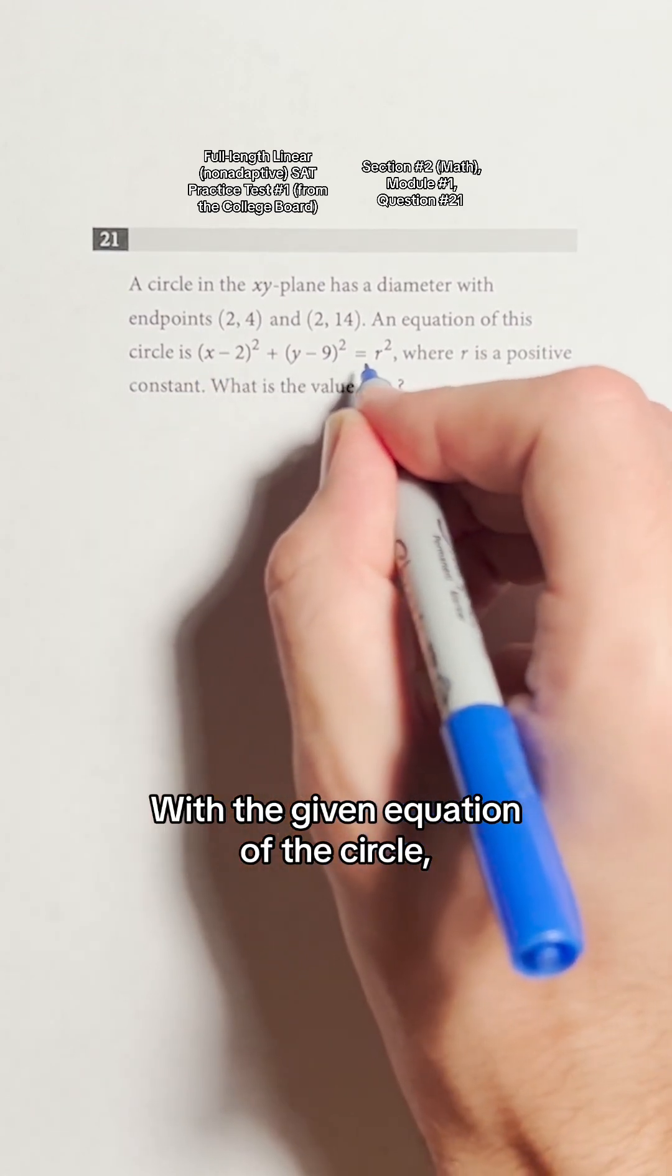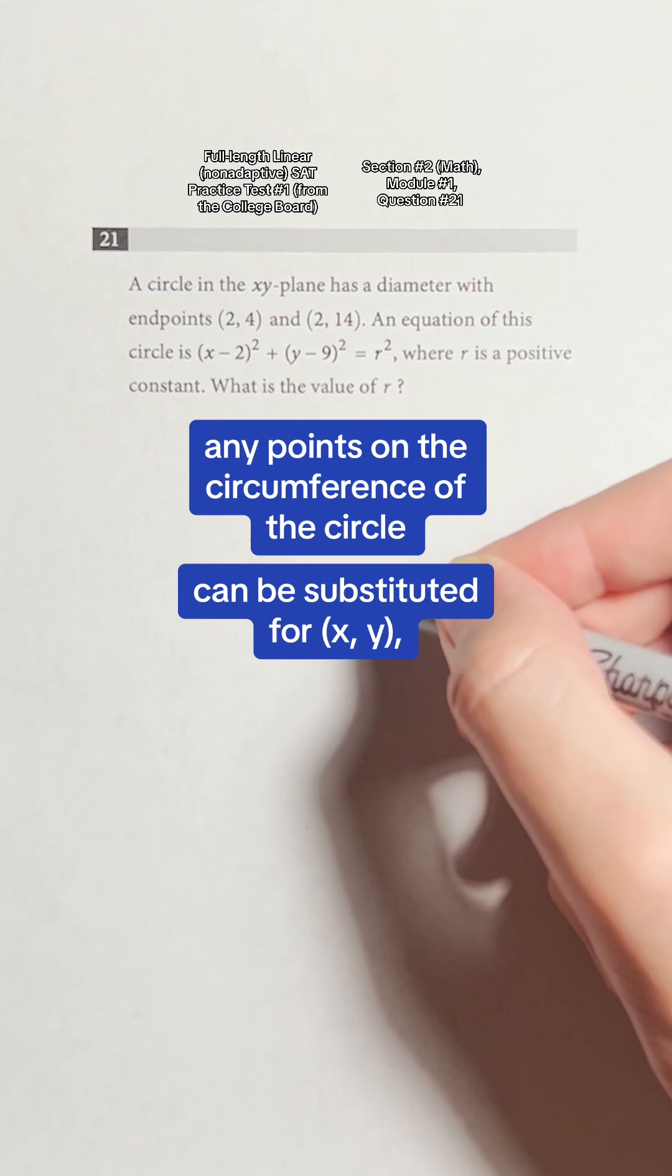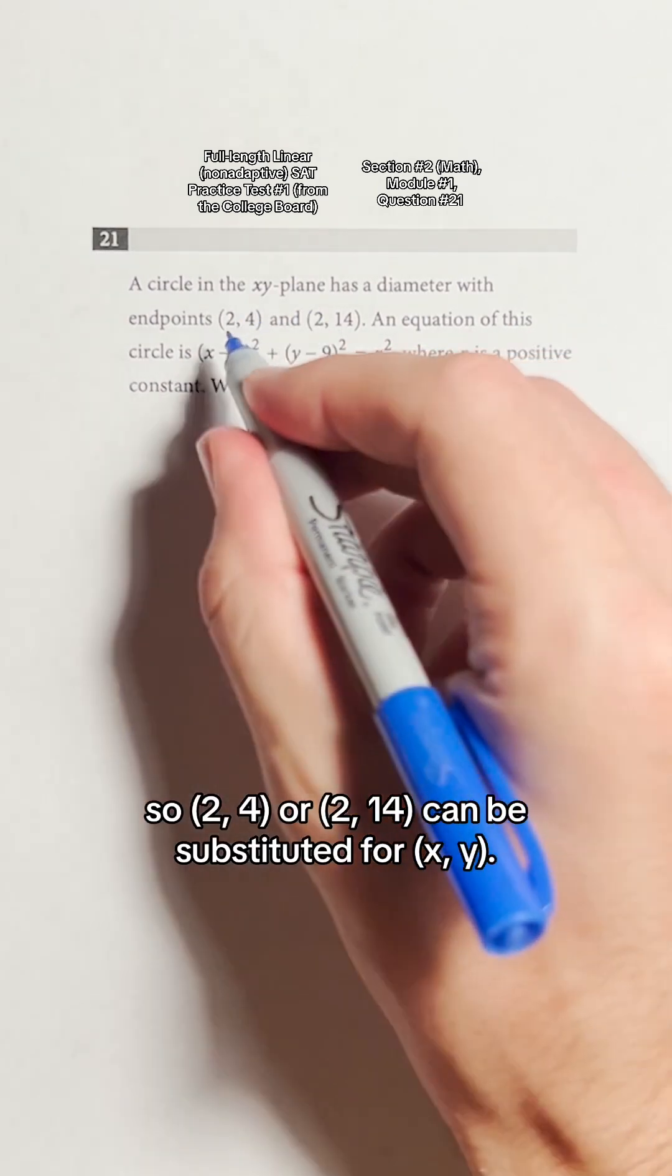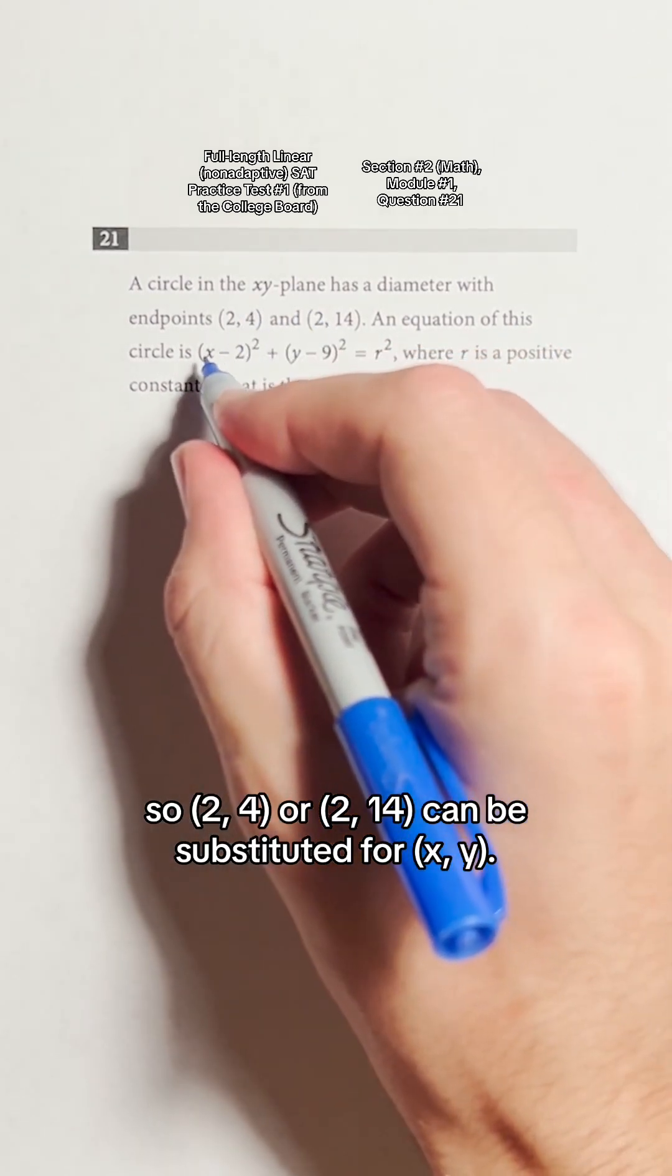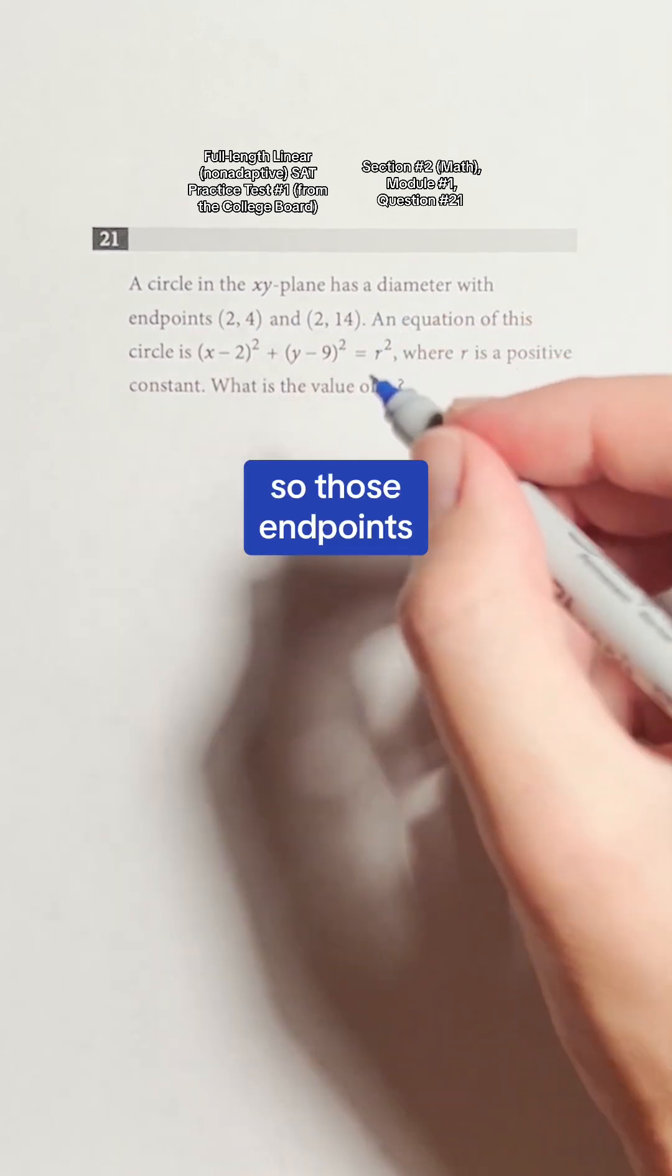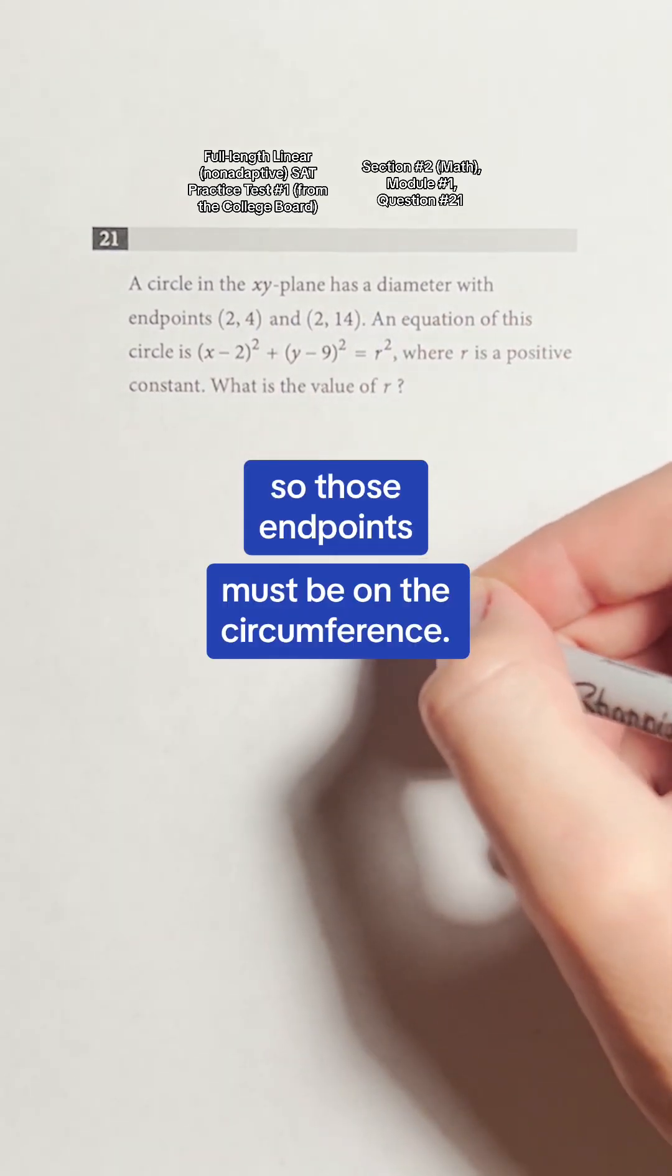With the given equation of the circle, any points on the circumference of the circle can be substituted for xy. So (2,4) or (2,14) can be substituted for xy. They're the endpoints of a diameter, so those endpoints must be on the circumference.